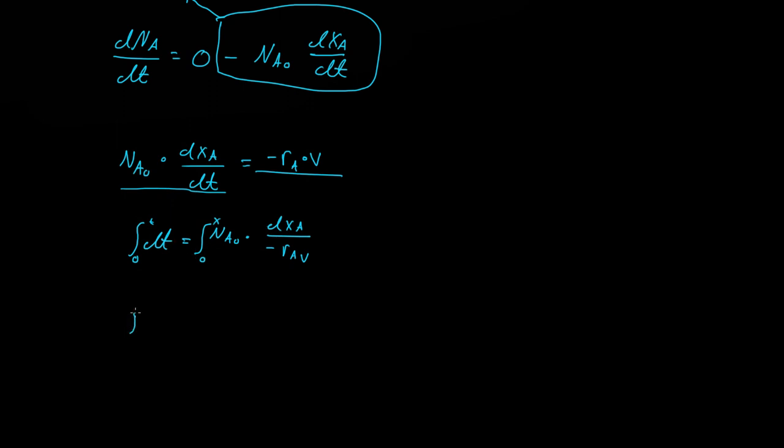So now the time it takes for a conversion to occur, so T, is equal to the integral, and really this is constant, so we can just move this out here. So we get NA naught times the integral from 0 to X of dXA over negative RA times the volume of the batch reactor.